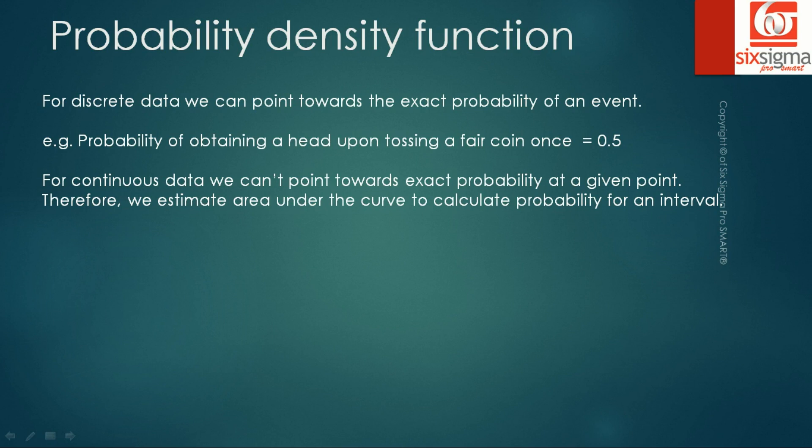Probability density function. For discrete data we can point towards an exact probability of an event, as it attains only certain discrete values. For example, probability of obtaining a head upon tossing a fair coin once is equal to 0.5. You can either get a head or get a tail, and we are looking for a favorable event which is a head, so it's 1 by 2, that's 0.5. Whereas for continuous data we can't point towards exact probability at a given point. Therefore, we estimate area under the curve to calculate probability for an interval.